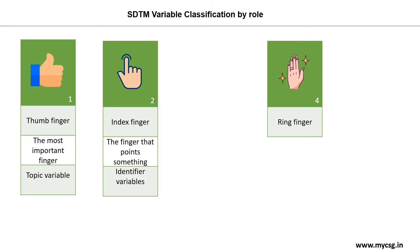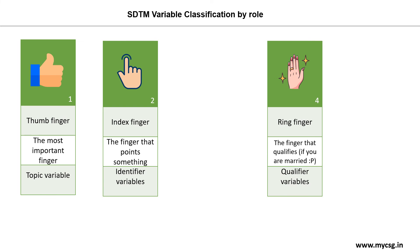We will come to the third finger, the middle finger, in a while and jump back to the ring finger. Try to associate the tag 'the finger that qualifies.' When people get engaged or married, they wear a ring. That ring on the ring finger is qualifying something about a person. So when you associate the tag 'finger that qualifies' to the ring finger, you can quickly recollect the qualifier variables.